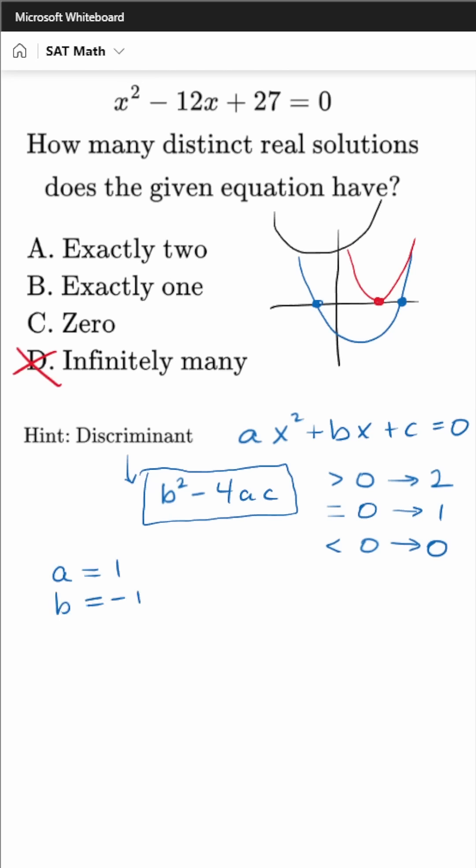So plugging in our values, a of one, b of negative 12, c of 27, we can figure out that the discriminant's equal to 144 minus 108. And I know it's getting hard to see here. But eventually, we calculate that the discriminant is 36.